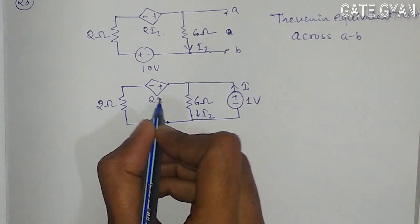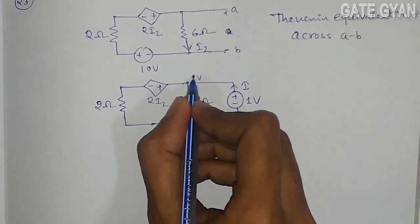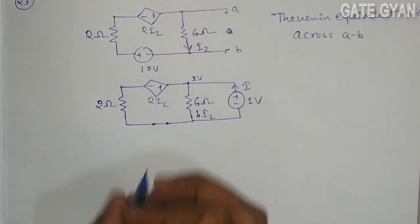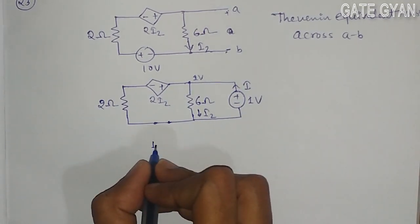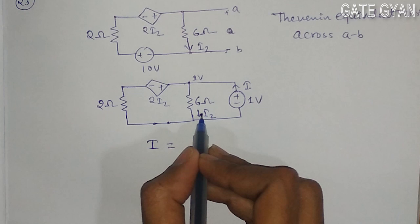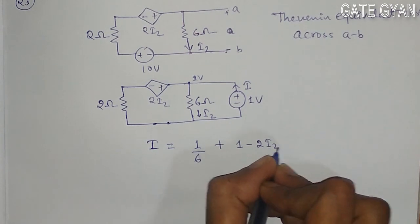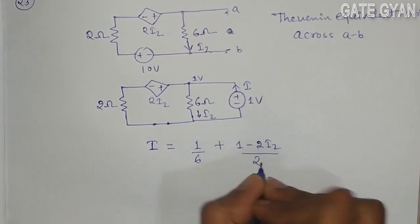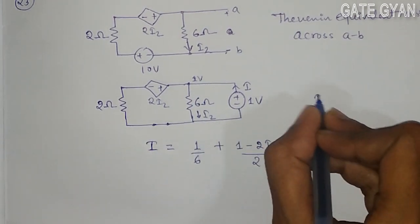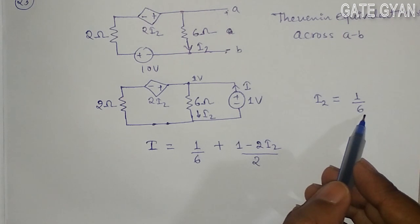This point voltage is going to be 1 volt. Now here I will apply nodal analysis. So it will be: I equals 1 divided by 6 — that is the current flowing through this circuit — plus (1 minus 2I2) divided by 2. And here I2 is equal to 1 upon 6 from this circuit. So I will replace this I2 value.